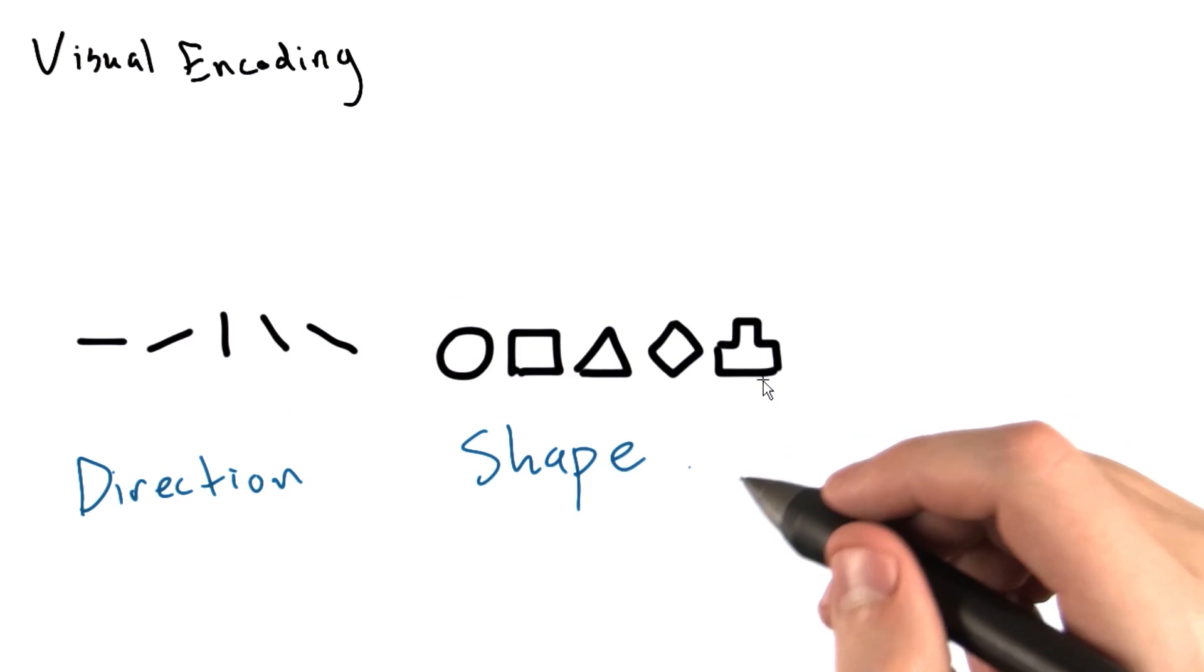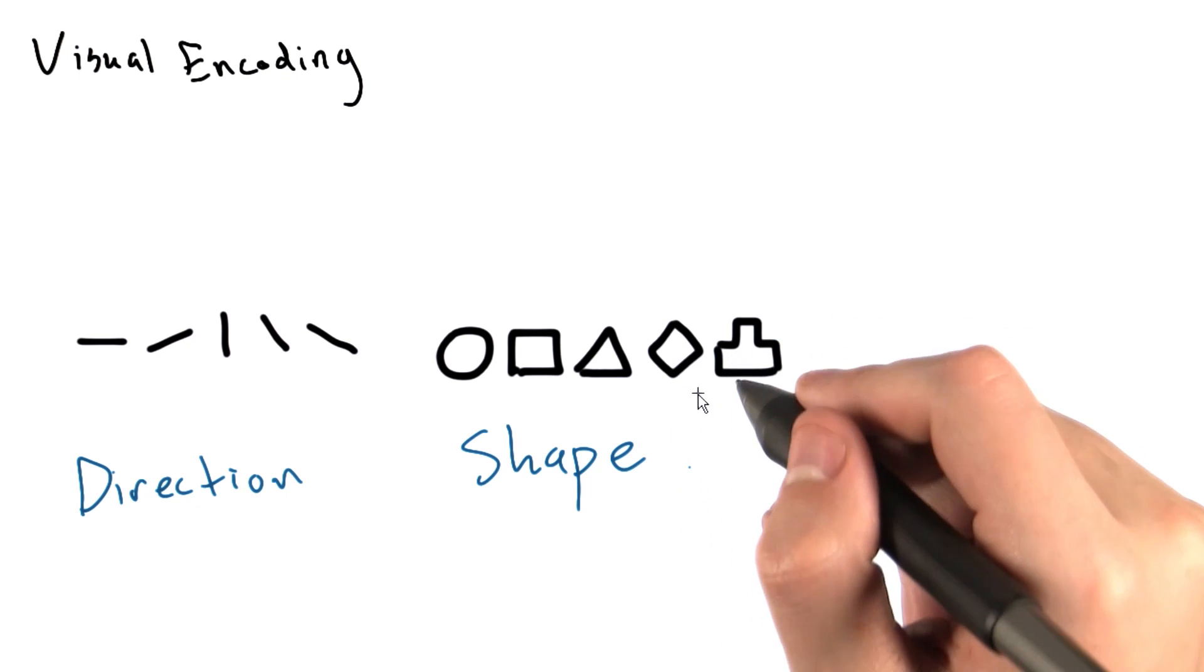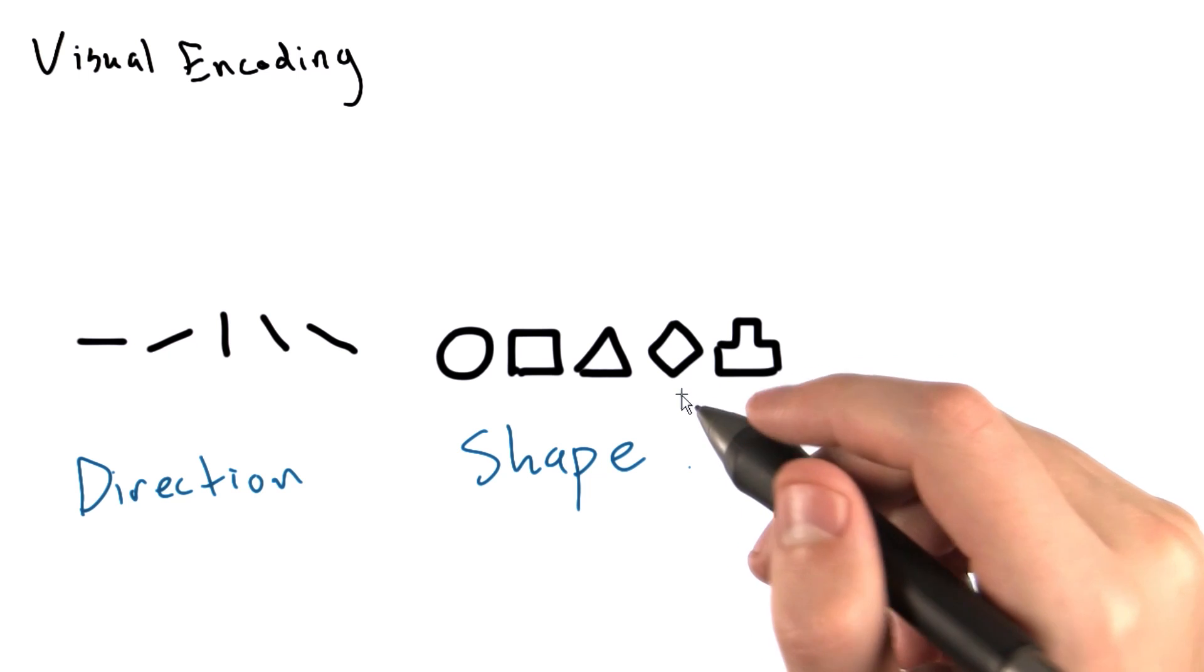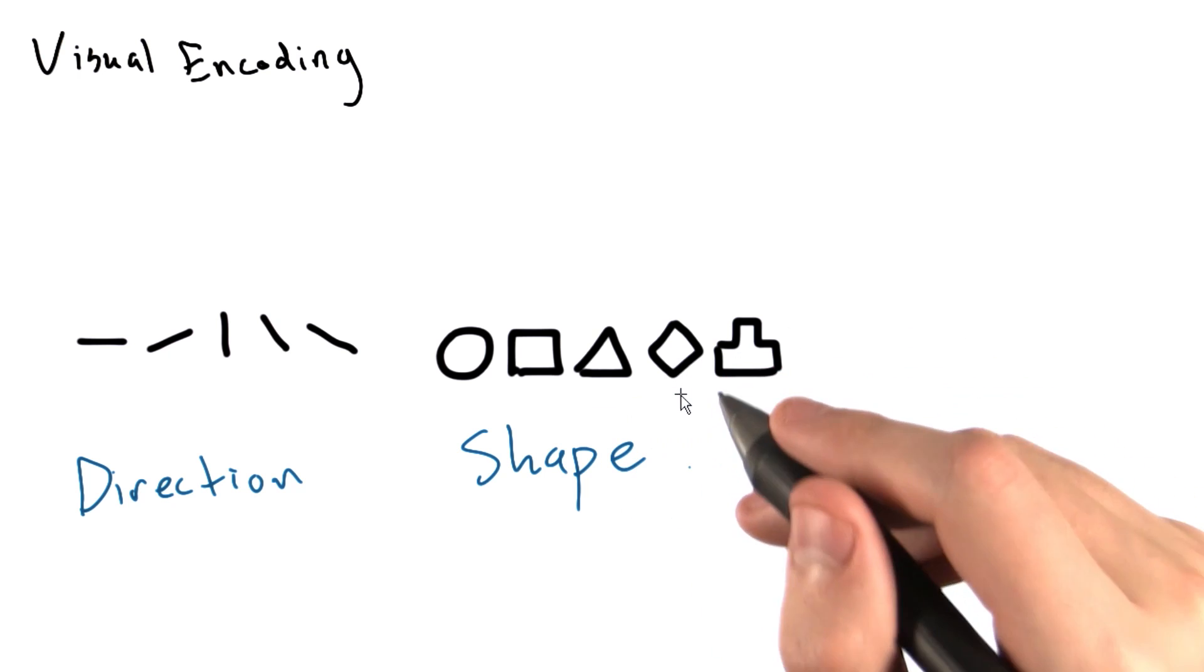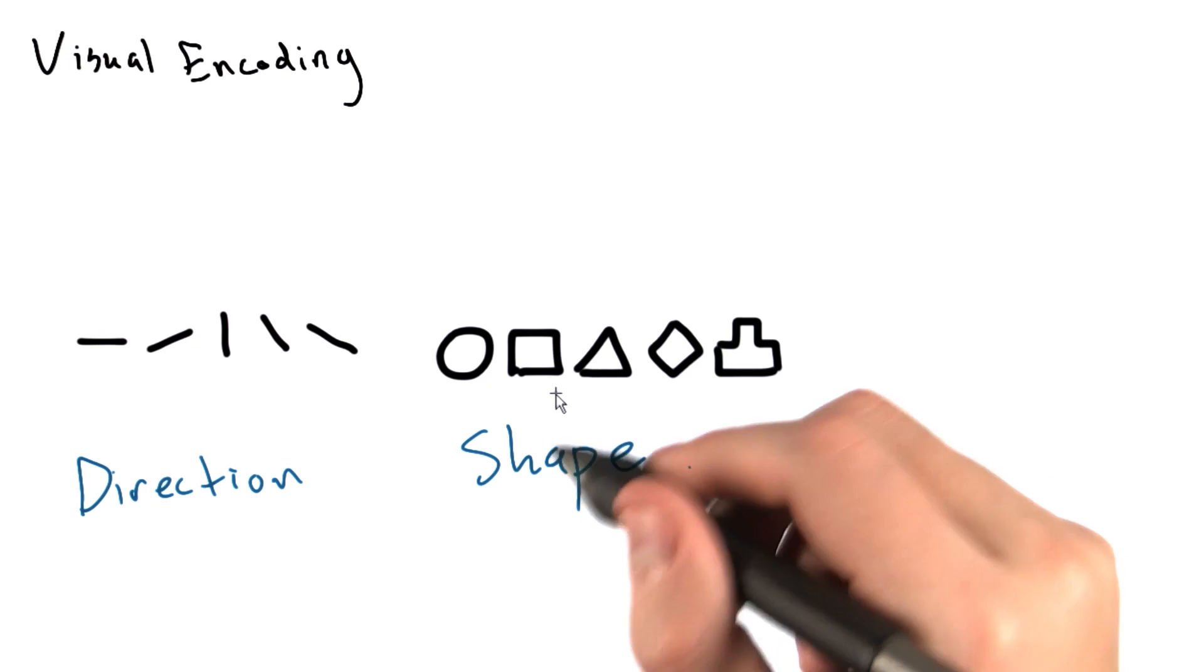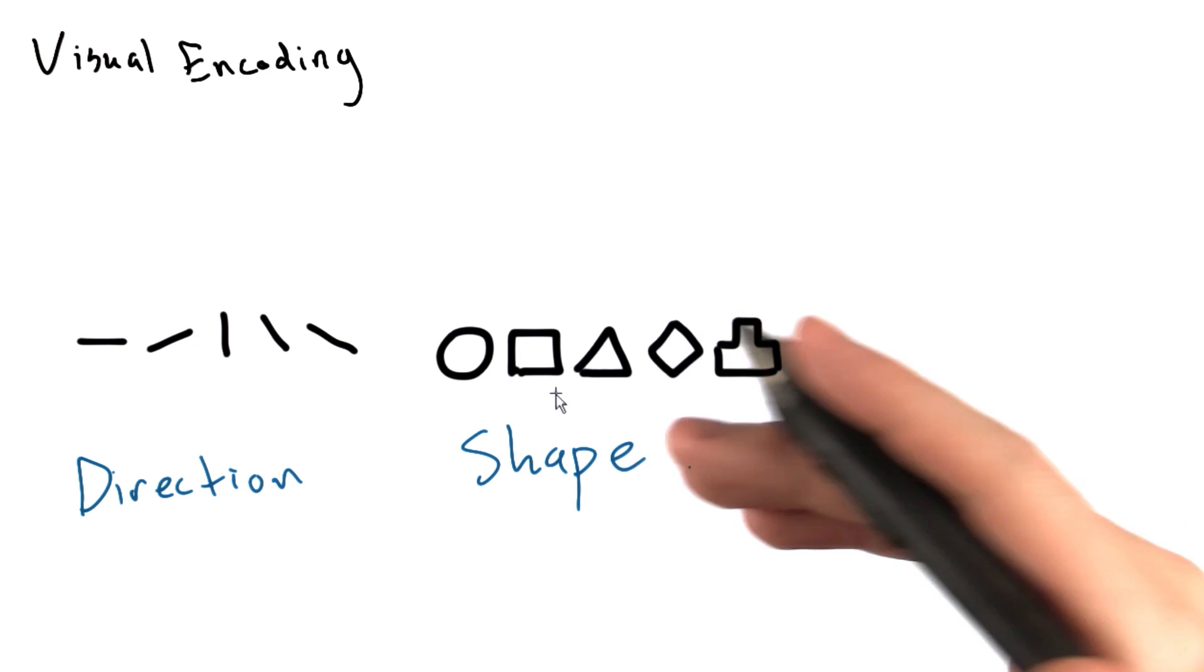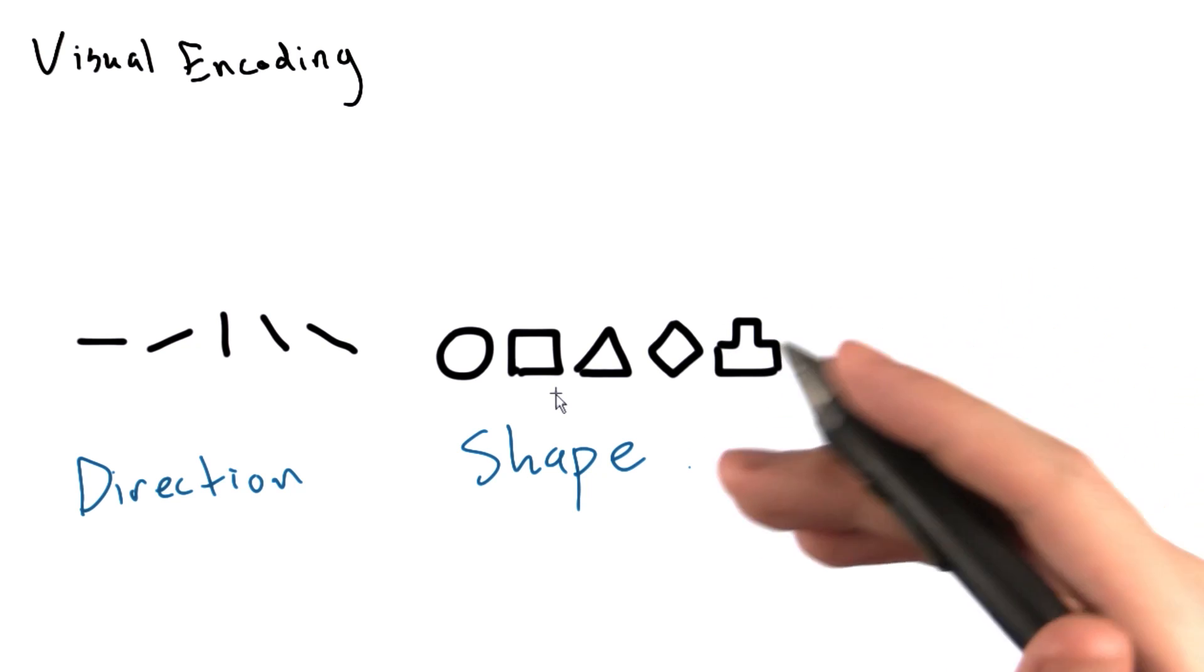Another encoding that can be used is shape. Shapes and symbols are commonly used to differentiate categories of objects. For example, say that we had a scatter plot. We could use triangles and squares to show trends for two different types of data, say two different baseball teams or two different districts in our orchard data.